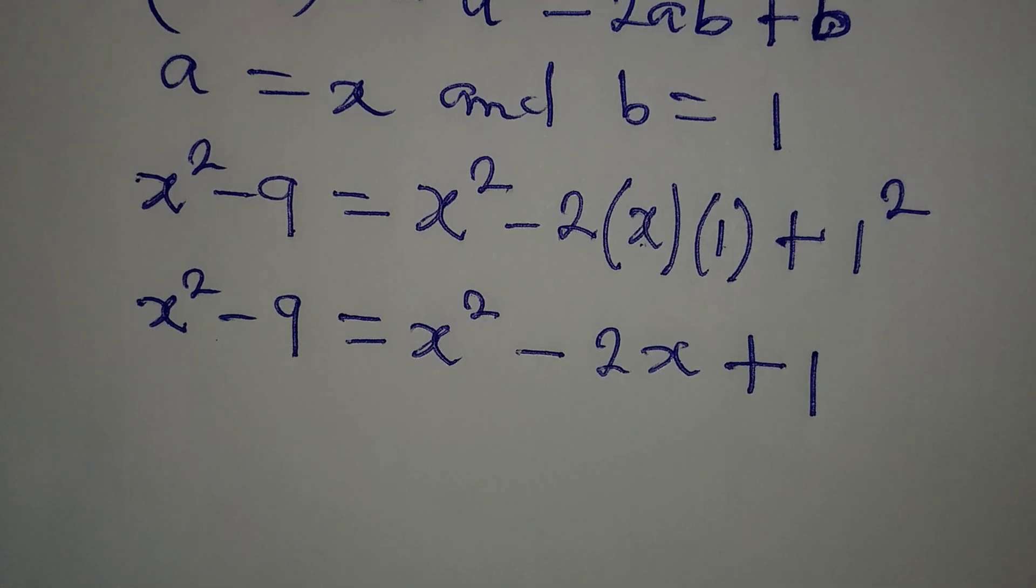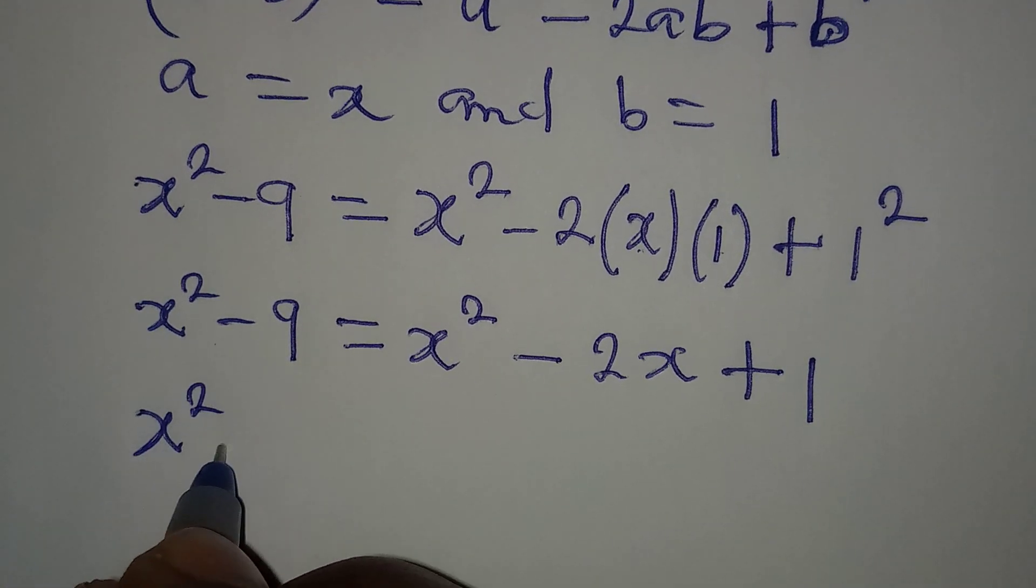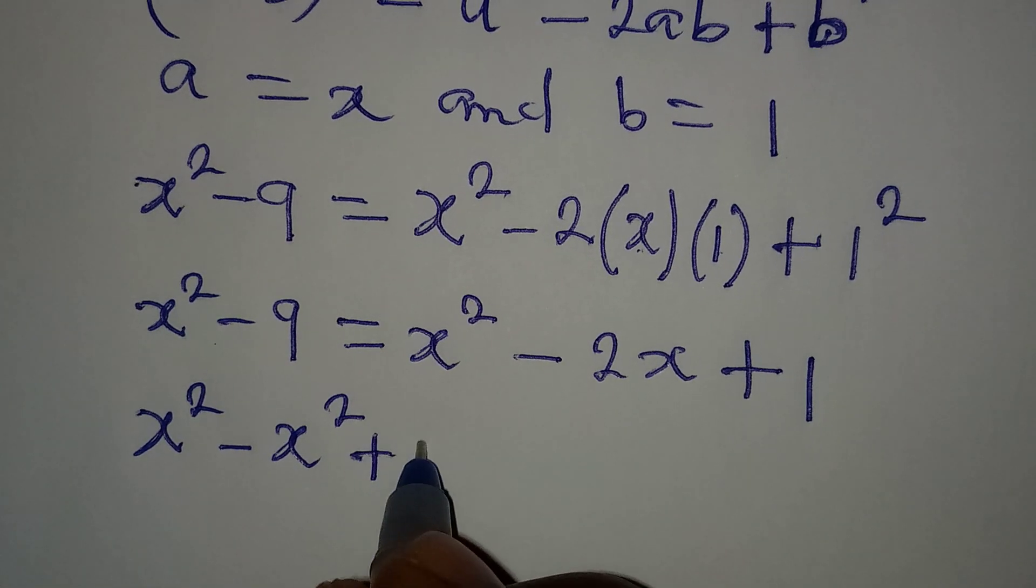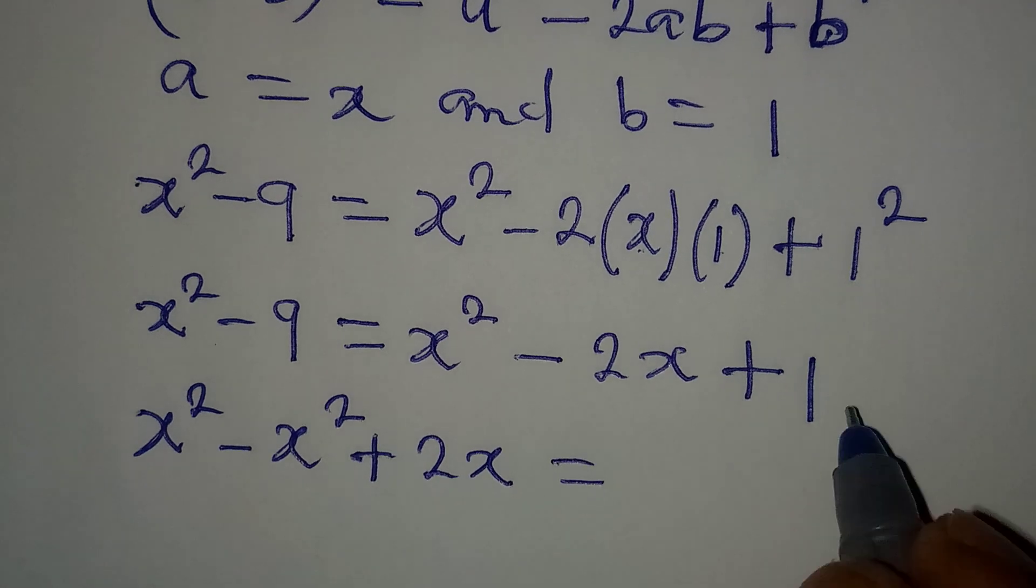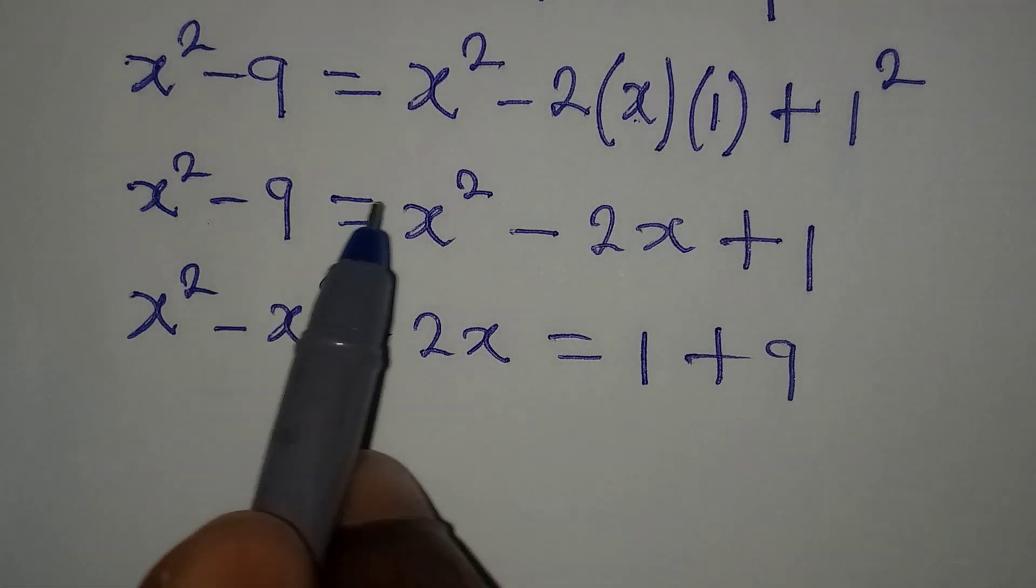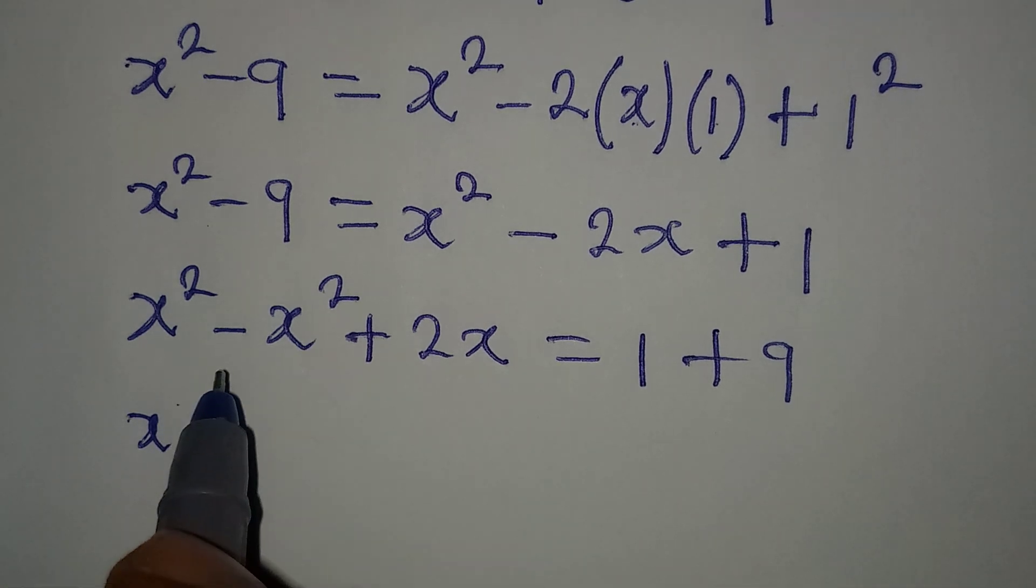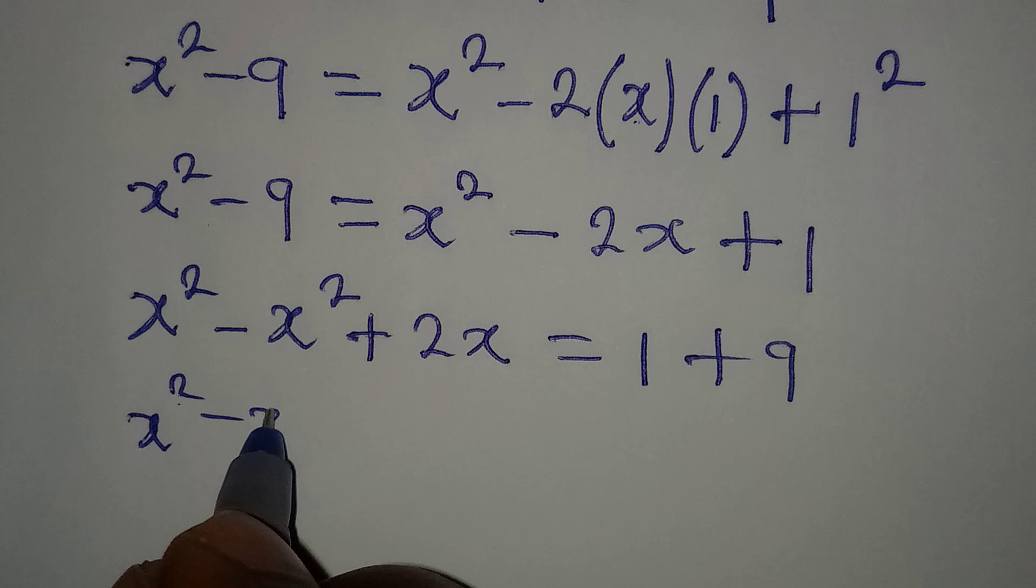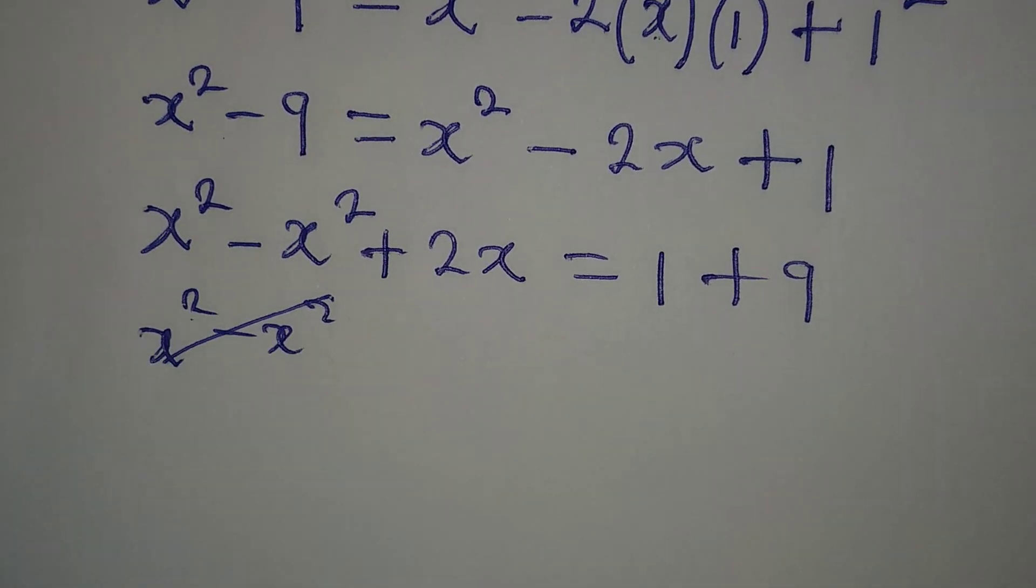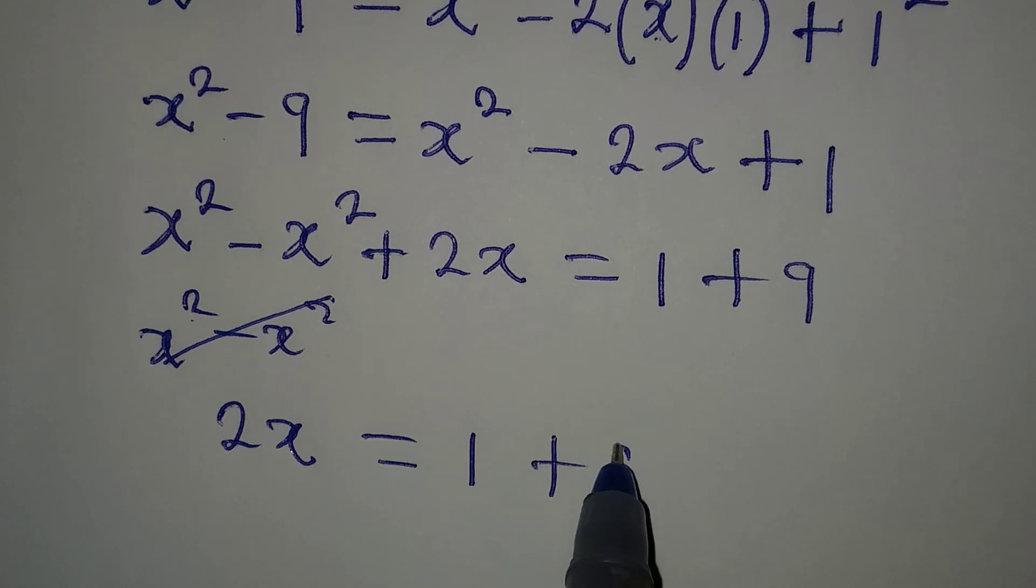What can I do from here? Let's collect like terms. So we have x squared minus x squared. This comes out to become plus 2x to be equal to 1 plus 9, because this goes to the other side to become positive. So our x squared minus x squared will be gone. Because x squared minus x squared is 0, we have 2x equal to 1 plus 9.